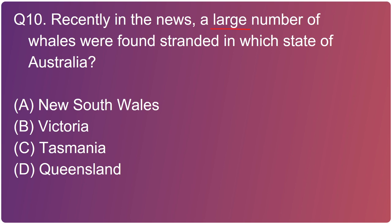Recently in the news, a large number of whales were found stranded in which of the following states of Australia? It is option C - Tasmania. Tasmania's Department of Primary Industries, Parks, Water and Environment discovered around 380 whales stranded off the sandbar of Tasmania, an island state of Australia located 40 kilometers to the south of the Australian mainland. At least 25 of the animals are believed to be pilot whales, a species of oceanic dolphin that grows seven meters long and can weigh up to three tons. The two specific types are short-finned pilot whale and long-finned pilot whale.